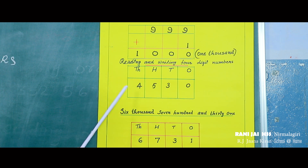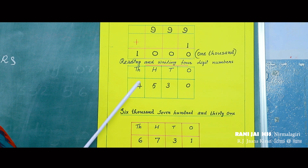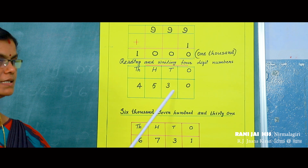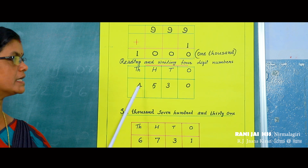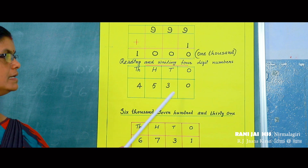One more number: in thousands place — then very simple. How can you read 4530? All of you try to read that: 4530.